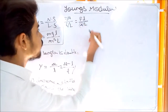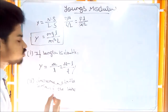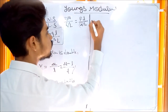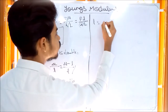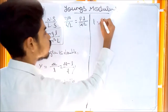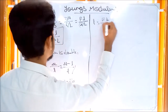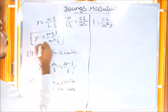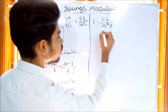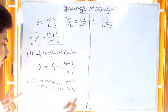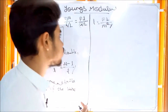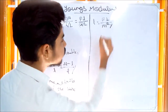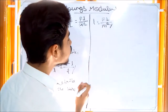Now, how do we use the formula? We will rearrange the formula. The rearranged formula is F times L divided by R squared.